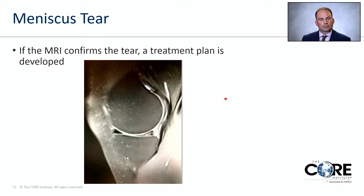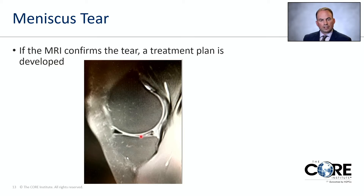If the MRI confirms the tear, a treatment plan is developed. On the MRI shown, you can see the end of the femur bone and the top of the tibia bone. The meniscus is a dark triangular-shaped structure. There's a white line that clearly goes through the posterior horn of the meniscus — that indicates a tear — along with a small fragment. This is a very clear representation of what a meniscus tear looks like on MRI.